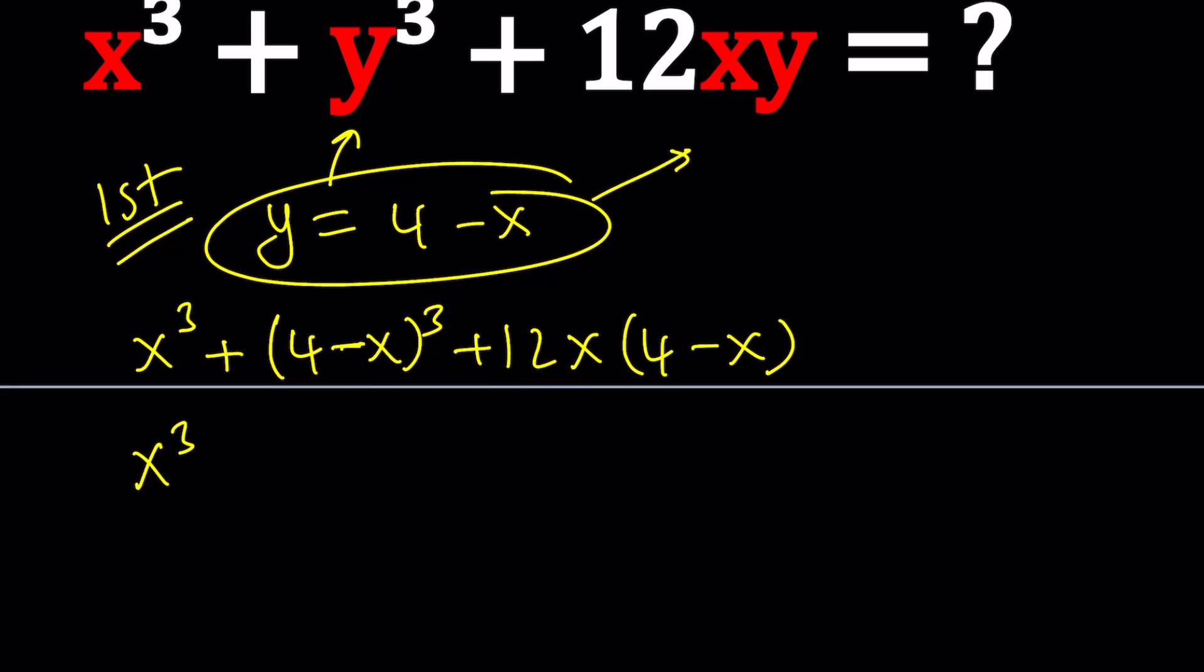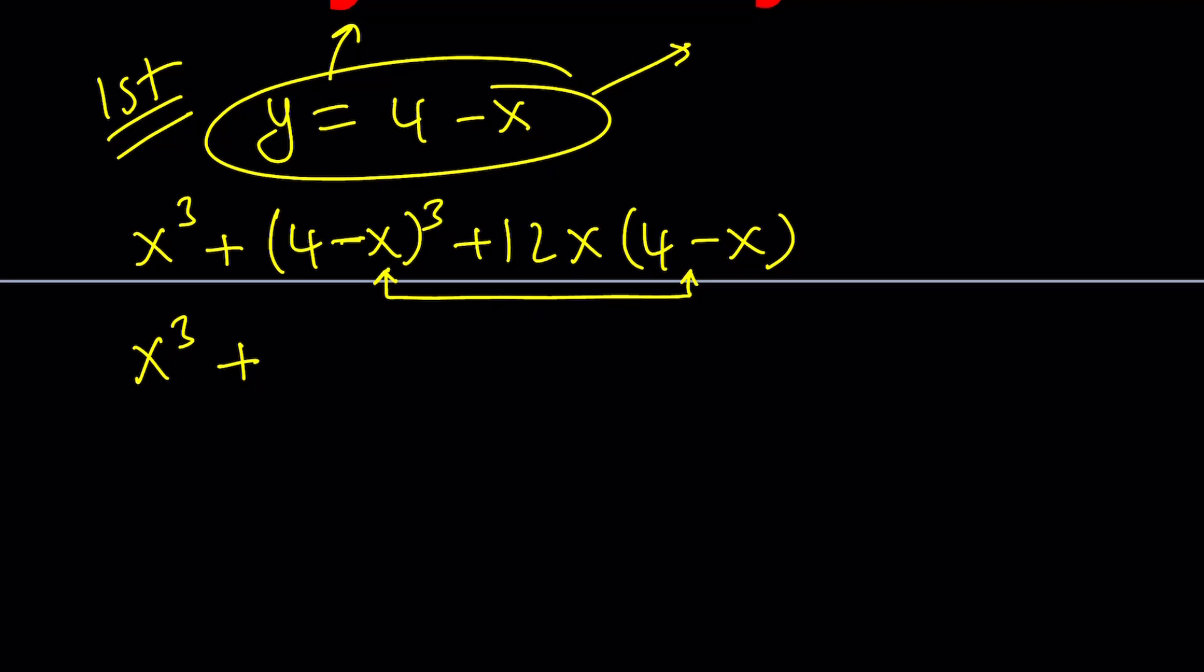Let's expand (4 - x)³. At this point, I'm also thinking we could probably factor out (4 - x), and that might give us something helpful. But anyway, let's proceed. Using the formula: 4³ - 3(4²)x + 3(4)x² - x³ + 48x, distributing this, minus 12x². Awesome.